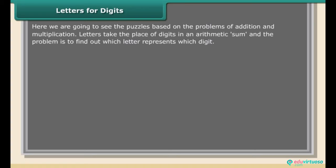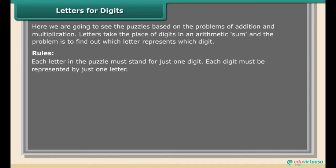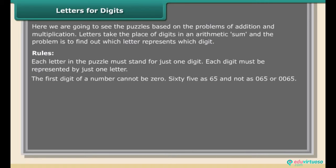Letters for digits. Here we use puzzles based on addition and multiplication where letters take the place of digits, and the problem is to find out which letter represents which digit. Rules: each letter must stand for just one digit, each digit must be represented by just one letter, and the first digit of a number cannot be 0.